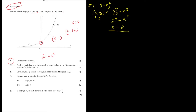Question 5.2 introduces a new graph g. Graph g is obtained by reflecting graph f about the line y = x. You need to determine the equation of g in the form y = ... You need to understand that reflecting about the line y = x means you are finding the inverse of f.